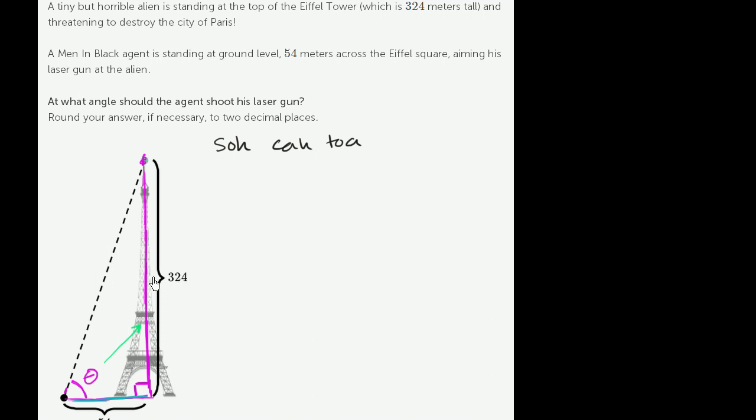We can say that the tangent of theta is equal to the length of the opposite side, 324 meters, over the length of the adjacent side, over 54 meters.